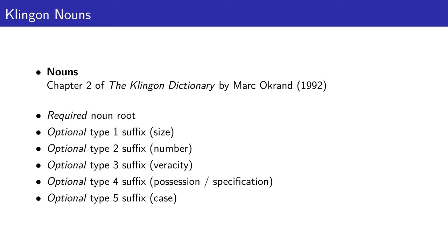Every Klingon noun is required to have a root. Following the noun root, there may be optionally up to five suffixes. Each of these five types of suffixes encodes a piece of information about the noun. Type 1 suffixes encode information regarding size. Type 2 suffixes encode information regarding number. Type 3 suffixes encode information regarding veracity. Type 4 suffixes encode information regarding possession or specification. Finally, type 5 suffixes encode information regarding the noun's case.